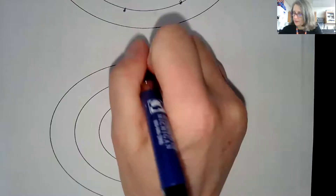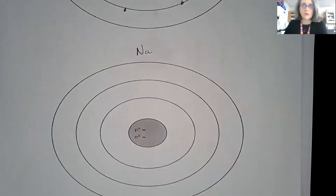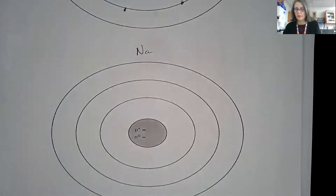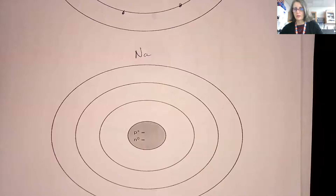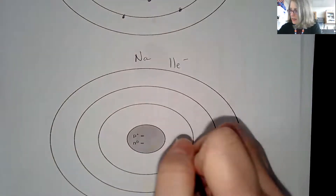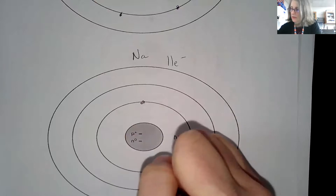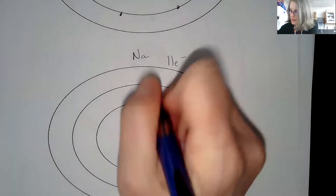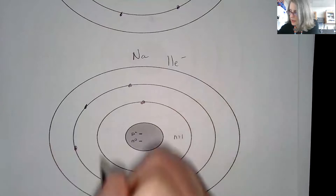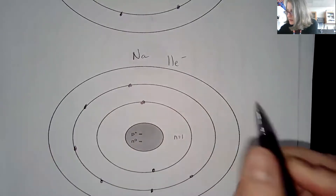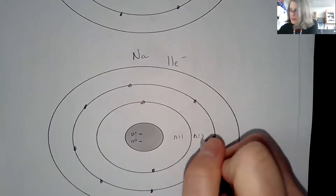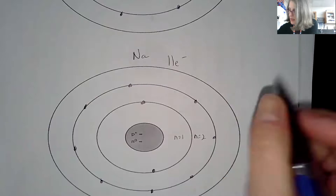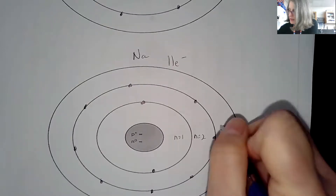Let's do sodium. With these videos, if you need to stop and pause while you're drawing these circles, that's fine — they don't have to be perfect. Sodium has a total of 11 electrons. Energy level one gets two electrons. Energy level two gets eight electrons — one, two, three, four, five, six, seven, eight. Then I have one electron in energy level three.